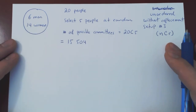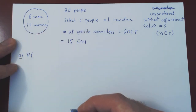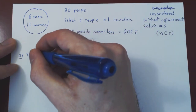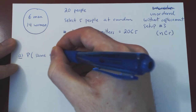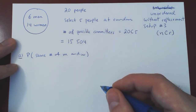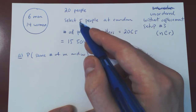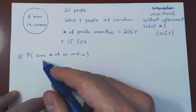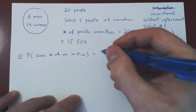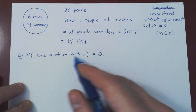Let's start with our questions. Question A: what is the probability of having a committee with the same number of men and women? Well, we have a committee of 5 people, and 5 is odd — so it is impossible to have the same number of men and women. If an event is impossible, its probability is 0. So that is a very easy first probability.